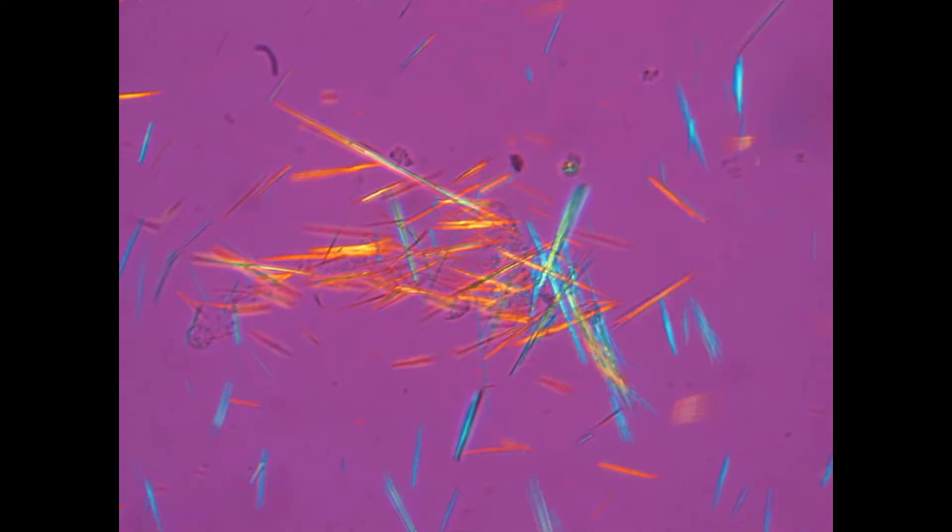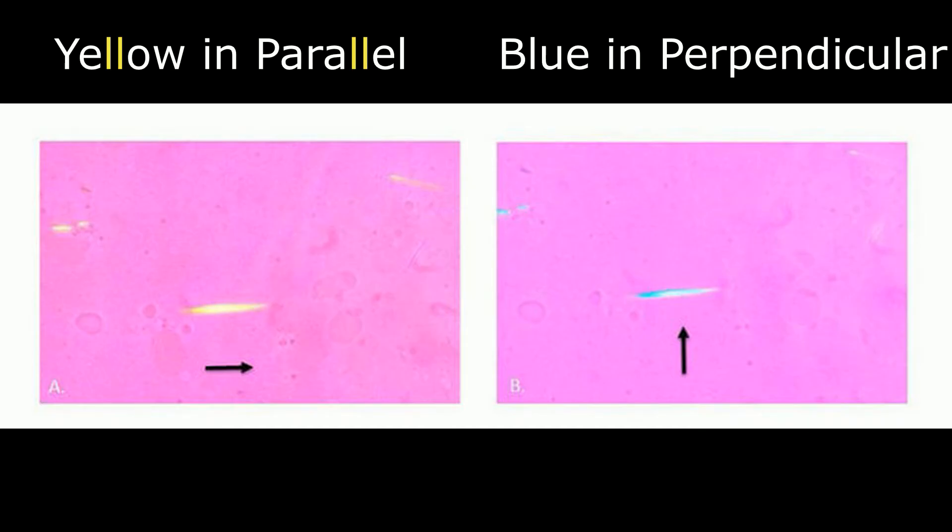On investigation, diagnosis can be confirmed by identification of uric crystals in the aspirate from a joint. Crystals are needle shaped and birefringent under polarized light. They appear yellow on the parallel light and blue on the perpendicular light. Remember both yellow and parallel have consecutive L's so it will be easier to remember that way.